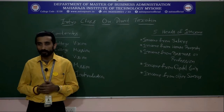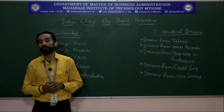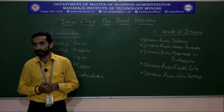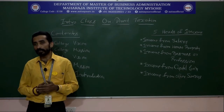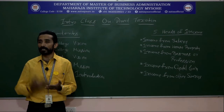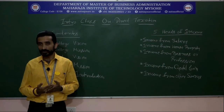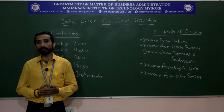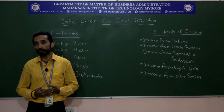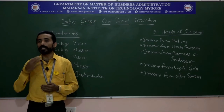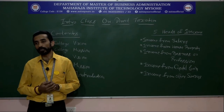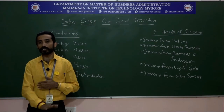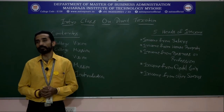Unit 2 covers two topics: income from salary and income from house property. Under income from salary, you will learn the meaning of salary, allowances, valuation aspects, taxable perquisites, retirement benefits, and deductions applicable to salary. Income from house property will be covered theoretically. Numerical problems in this unit are related to income from salary.